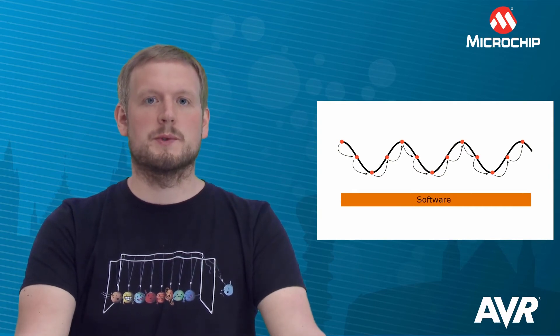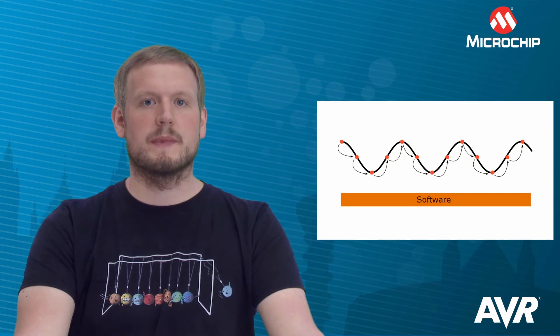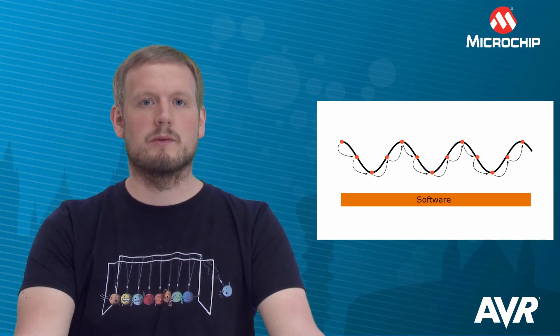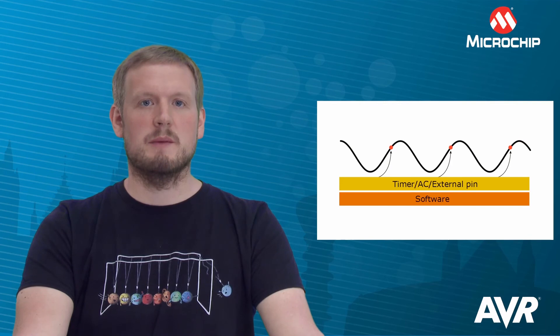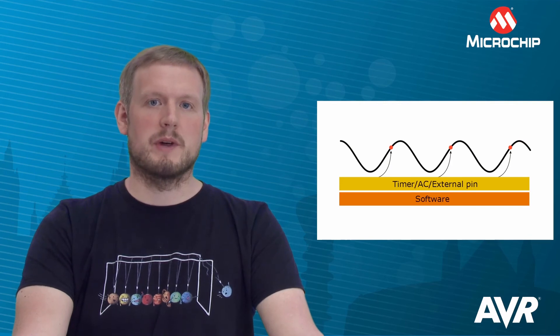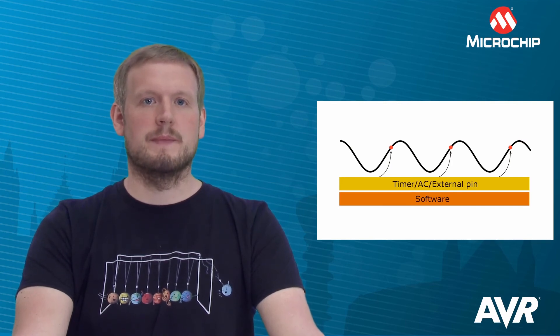Finally, we have the auto triggering mode. In this mode the conversion trigger is controlled by a peripheral in the MCU, such as a timer, analog comparator, or an external interrupt pin.